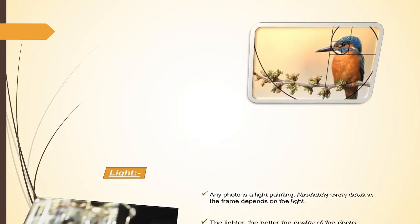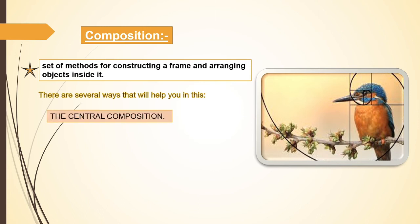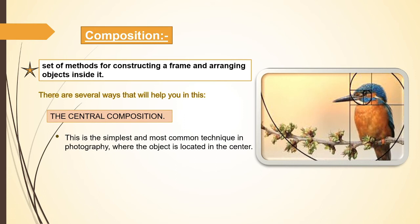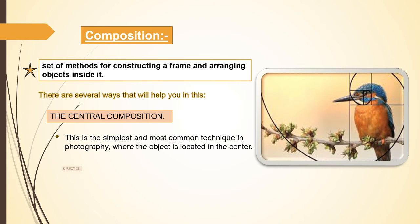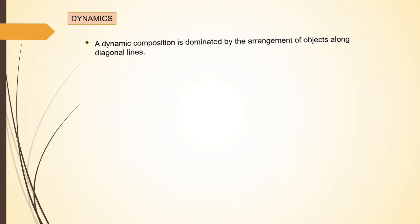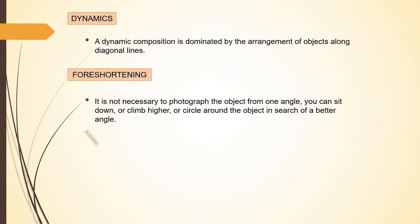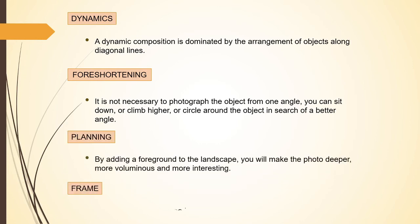The next point is composition. Composition is a set of methods for constructing a frame and arranging objects inside it. The main task of the photographer is to arrange all elements of the frame so that they look harmonious with each other. There are several ways to achieve this, including the use of dynamics, foreshortening, planning, and framing.